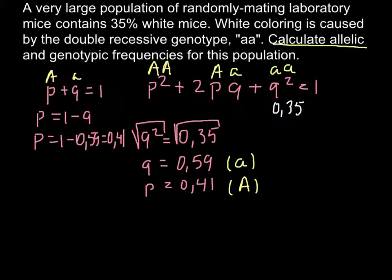Now we need to calculate genotypic frequencies. We have to find p², which stands for homozygous dominant. p² equals p multiplied by itself: 0.41 × 0.41 = 0.17.